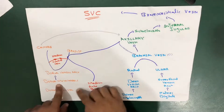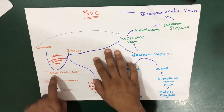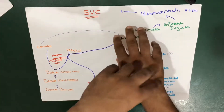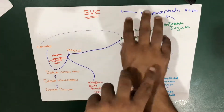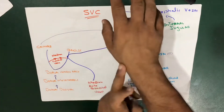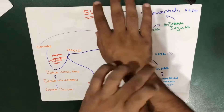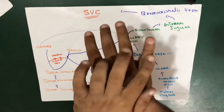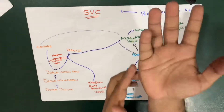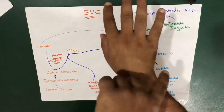From the dorsal digital veins, drainage goes into the dorsal metacarpals, and the dorsal metacarpals drain into the dorsal venous arc. From the dorsal venous arc, two veins arise — one on the lateral side and one on the medial side.